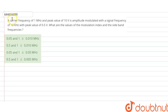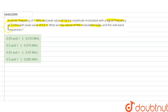Hello students, welcome to Doubtnut. Our question is: a carrier frequency of 1 megahertz and peak value of 10 volt is amplitude modulated with a signal frequency of 10 kilohertz with peak value of 0.5 volt. What are the values of the modulation index and sideband frequencies? In this question we are given the carrier frequency, the amplitude of the carrier frequency, the modulated signal frequency, and its peak value.